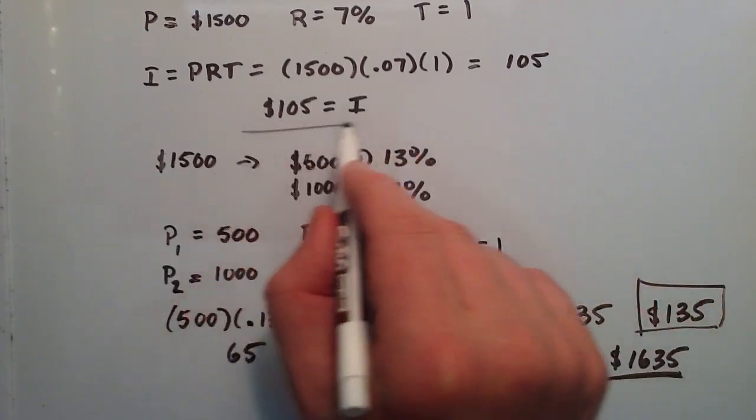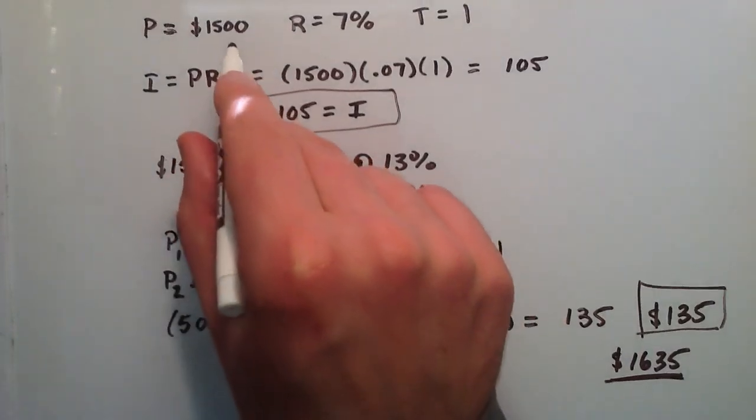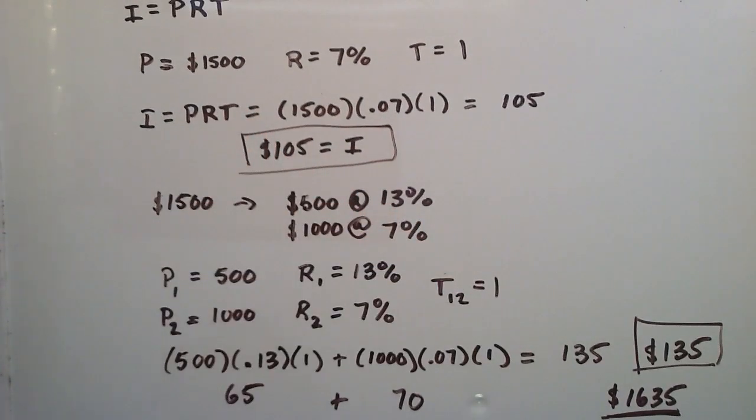So this is our interest that we made off of this deal. And in this case, this would have been our interest off of the first deal that we made. But anyway, that's some basics in calculating simple interest.